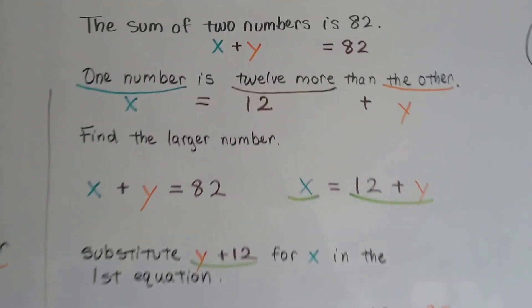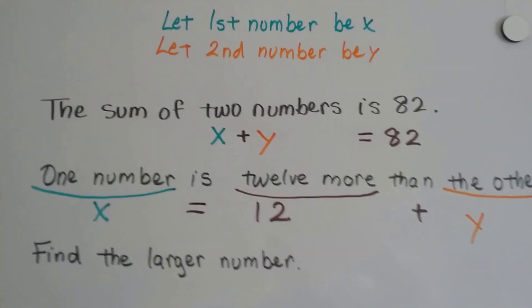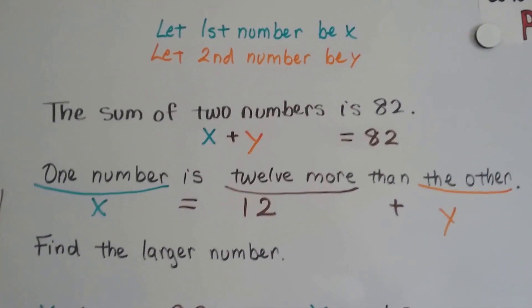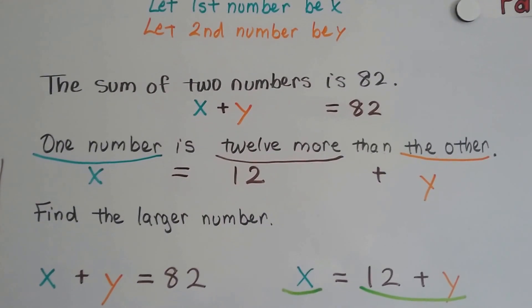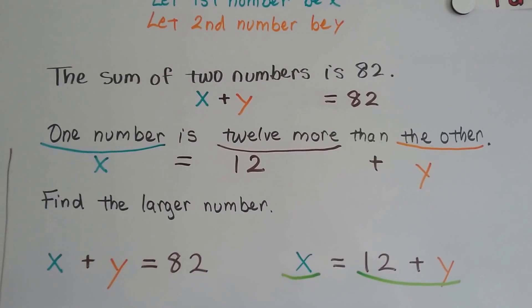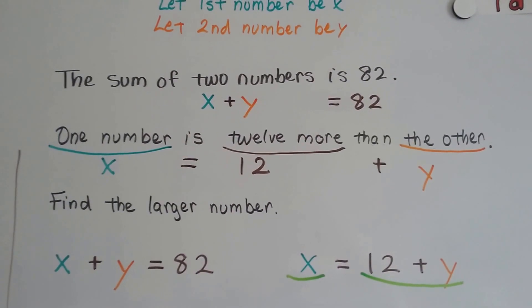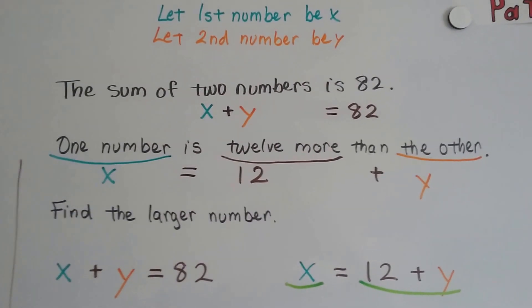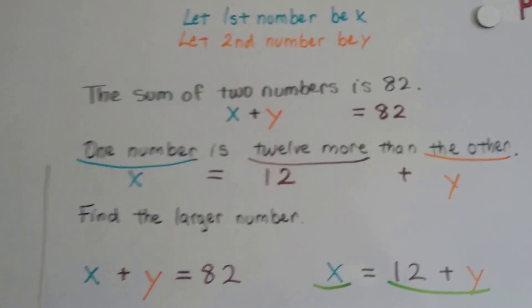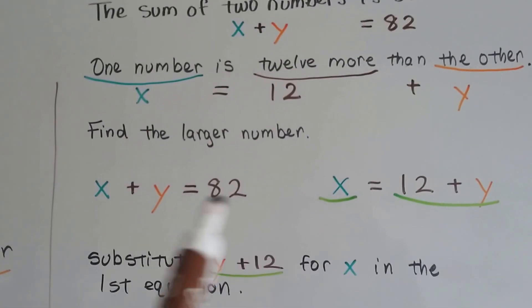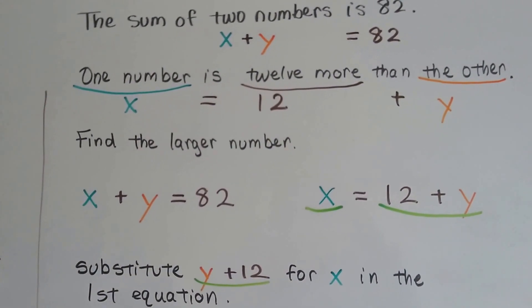Let's try it one more time with a little bit tougher one. I'm going to let the first number be x and the second number be y. It says the sum of two numbers is 82. One number is 12 more than the other number. Find the larger number. So the sum of two numbers, so we know x and y are going to be added together, is going to equal 82. So that's our first equation. We've got x plus y equals 82 as our first equation.